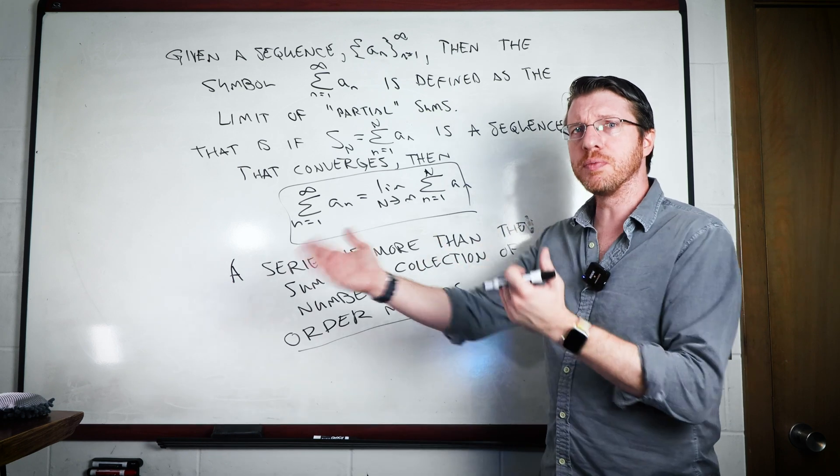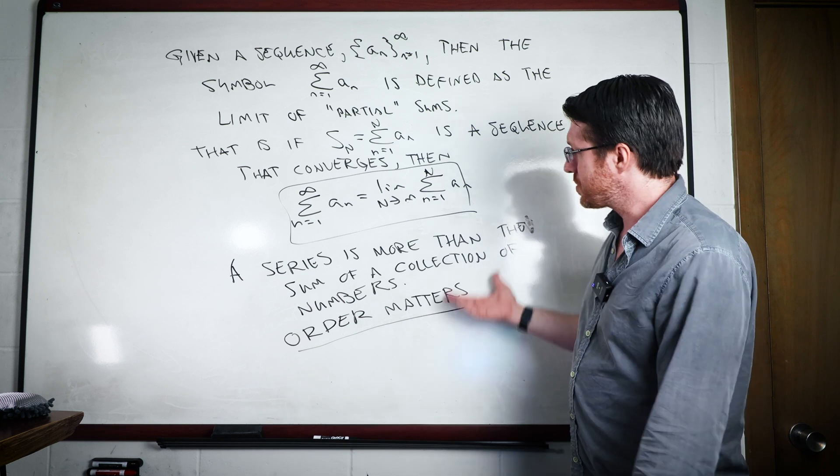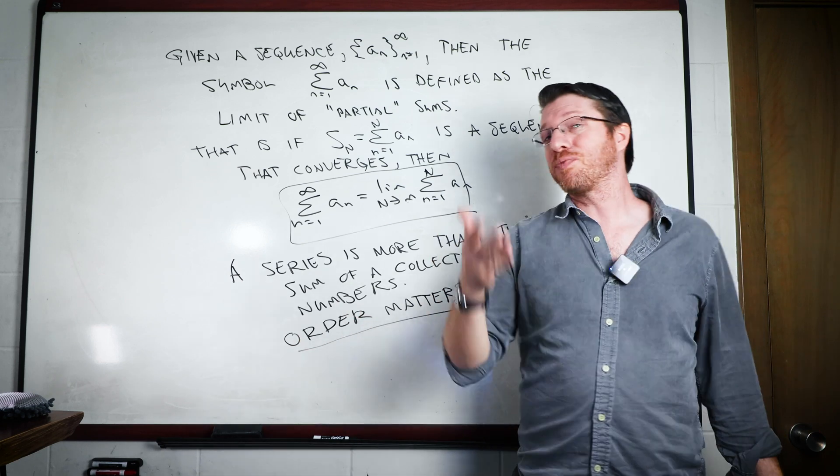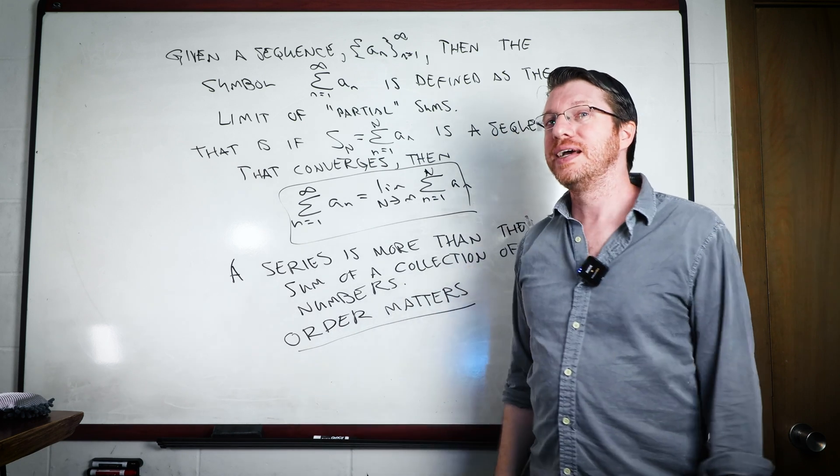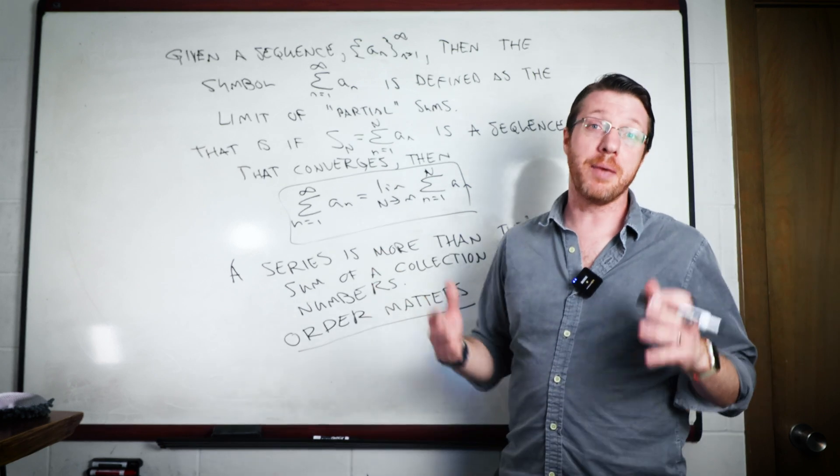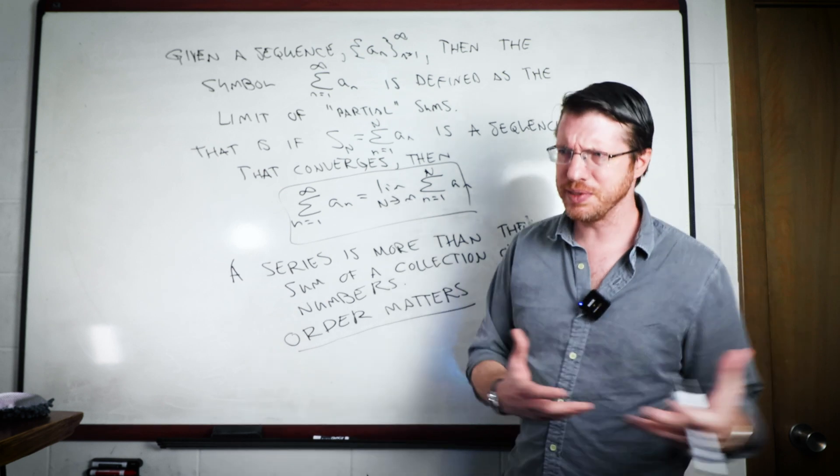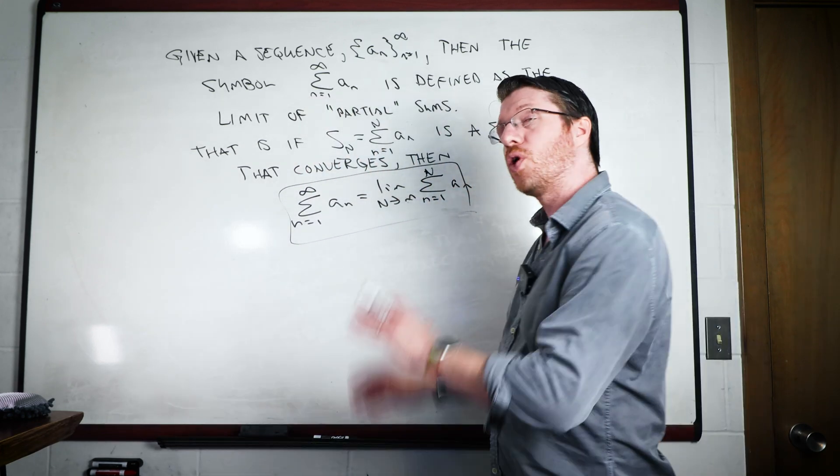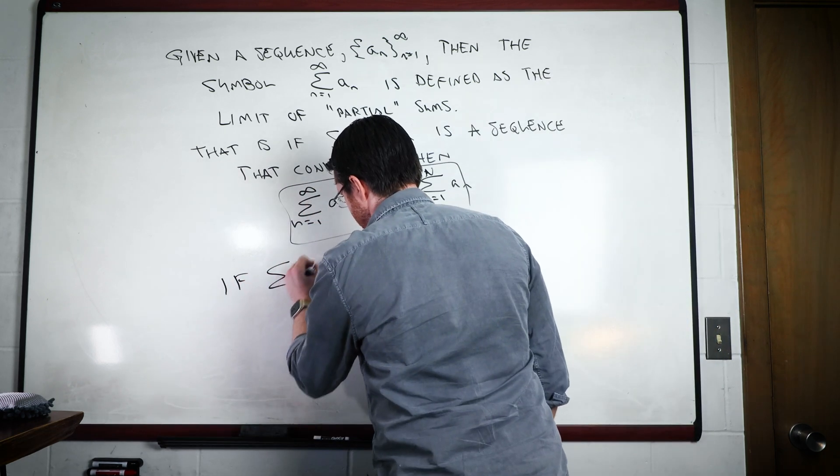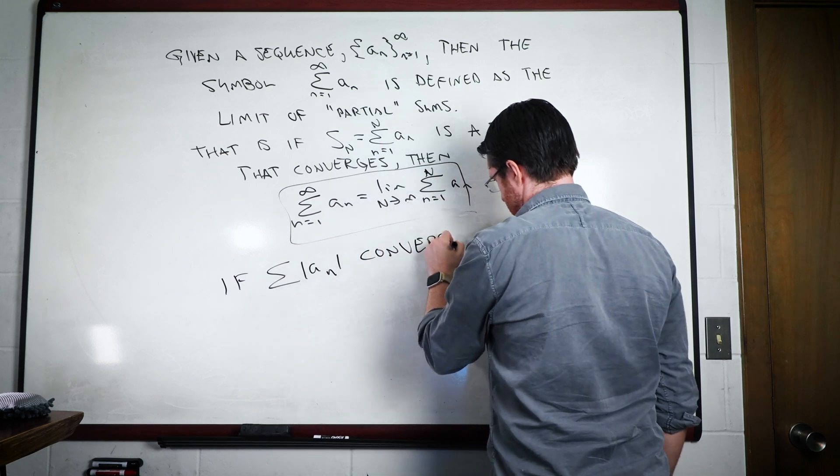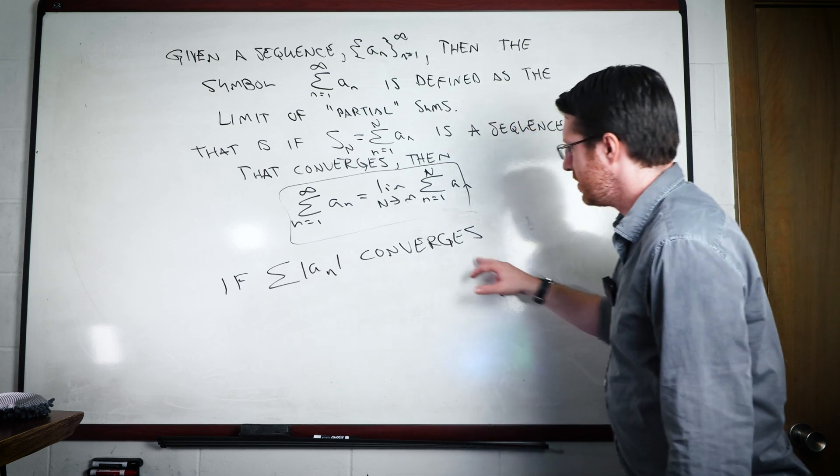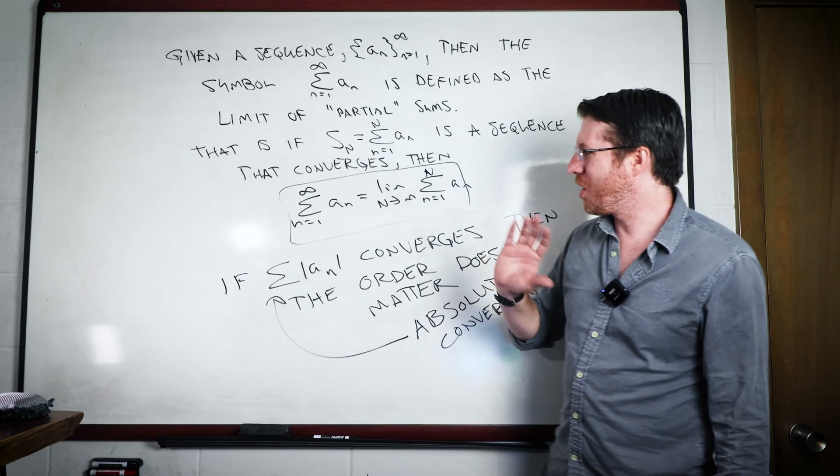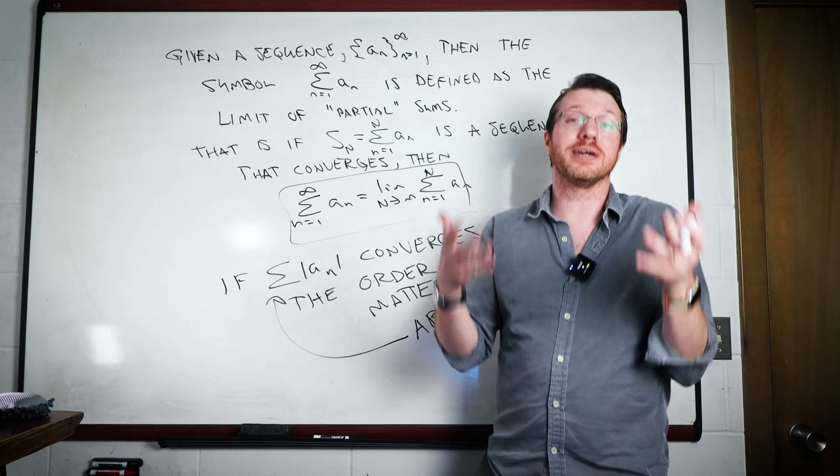What Dirichlet found is that by moving all these odd numbers around, you actually got a completely different answer. And that tells us that order actually matters when you're summing a series. And you need a series that is what is called absolutely convergent. So if the sum of absolute value of a_n converges, then the order doesn't matter. And this is what we call absolutely convergent.